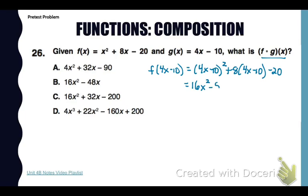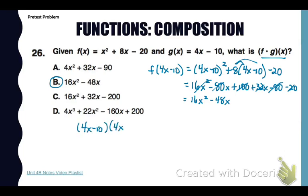Notice we need to square 4x minus 10. So I did that and got 16x squared minus 80x plus 100. Then I take 8 times 4x minus 10, subtract 20. So my simplified answer is 16x squared minus 48x. Now I didn't show my work when I squared 4x minus 10, so I'm going to show that to you now. I'm writing that next to each other and then I am just distributing using the foil method. You can see where that negative 80x comes from.